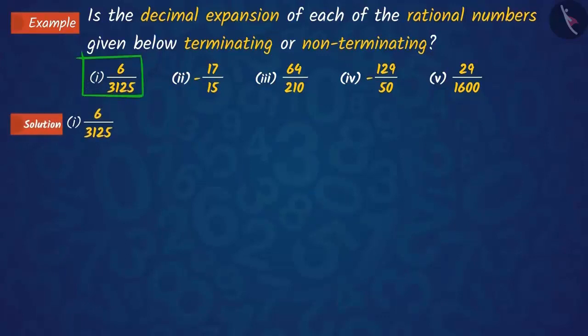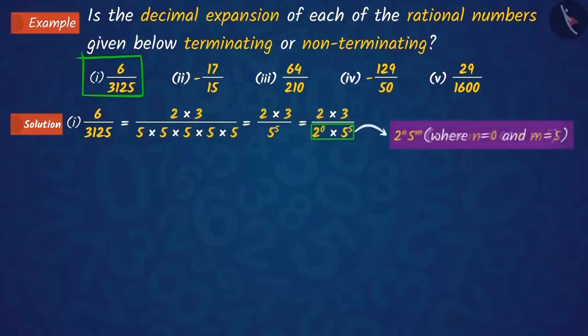If we factorize both the numerator and denominator of this first rational number, we find that the denominator is in the form of 2 raised to n into 5 raised to m.